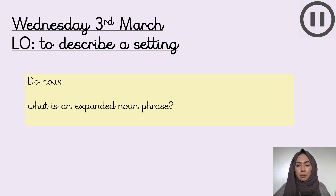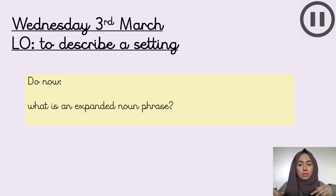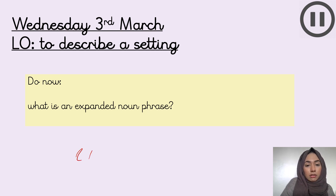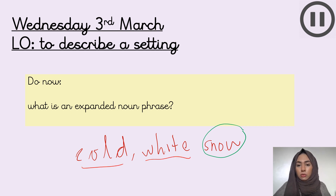Think about what is an expanded noun phrase — if you can't explain it, can you give me an example? Press pause now and complete that. So an expanded noun phrase is when you use more than one adjective to describe a noun. A noun names a person, place, or thing. An adjective describes a noun — big, little, red, brown, fantastic. An example might be 'the cold, white snow.' Snow is the noun, and cold and white are two adjectives separated by a comma to describe the noun.